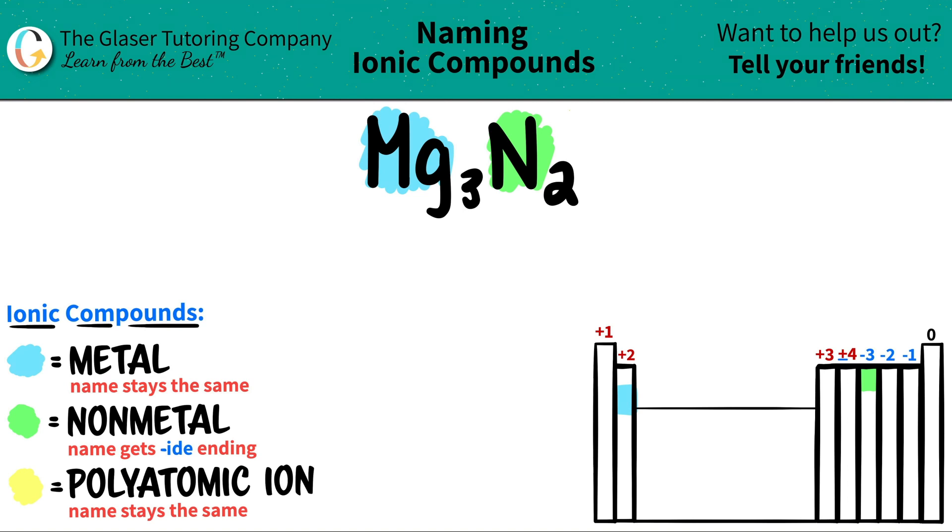Okay, so all we have to do is just go by these rules. The metal name always stays exactly the same. So if this is a metal, Mg, this is magnesium. I just have to write magnesium.